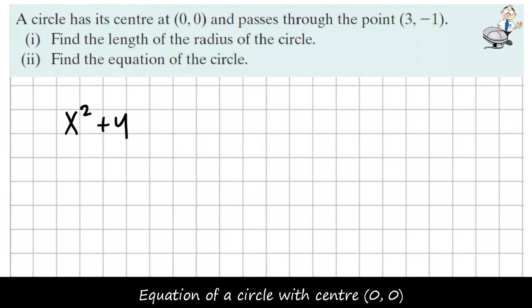Any circle centered at 0, 0 has the equation x squared plus y squared equals r squared. So this is a formula.